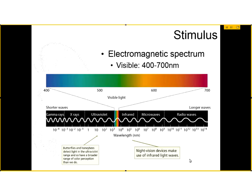The stimulus processed by the visual system comes from the electromagnetic spectrum, which has a large range of stimuli within it. We only process a small portion of that range. Other animals can use parts we cannot — butterflies and honeybees process ultraviolet light. We can use X-rays to visualize certain substances, and outside that we see gamma rays. Beyond the infrared end, those wavelengths are used in night-vision devices like cameras and goggles. Further along, microwaves and radio waves carry information between devices.